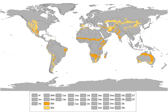A more precise definition is given by the Köppen climate classification, which treats steppe climates as intermediates between desert climates and humid climates in ecological characteristics and agricultural potential. Semiarid climates tend to support short or scrubby vegetation and are usually dominated by either grasses or shrubs.